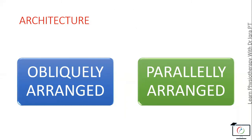According to architecture, there are mainly two types: obliquely arranged skeletal muscles and parallelly arranged skeletal muscles, divided according to the arrangement of the muscle fascicles. There is more mobility in the parallelly arranged muscle fibers than in the obliquely arranged muscle fibers, because parallelly arranged muscle fibers can contract maximally compared to obliquely arranged ones.